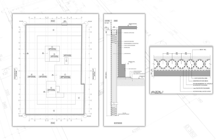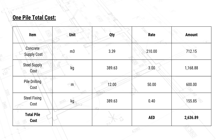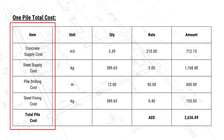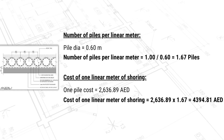So how to calculate the cost of that? In order to do this we need to calculate the concrete required, the steel required, the drilling cost, and the manpower or steel fixing required to calculate the cost of one pile. After that we can calculate the cost of one linear meter of this system.